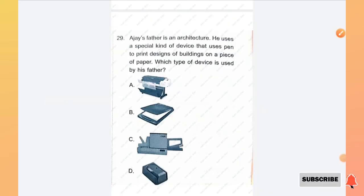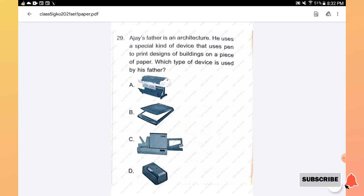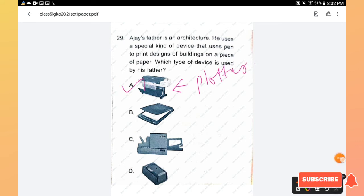Question number 29: Ajay's father is an architect. He uses a special kind of device that uses pen to print designs of buildings on a piece of paper. Which type of device is used by his father? Yes, it is option A, plotter. The name of the device is called plotter. Hence option A is the right answer.